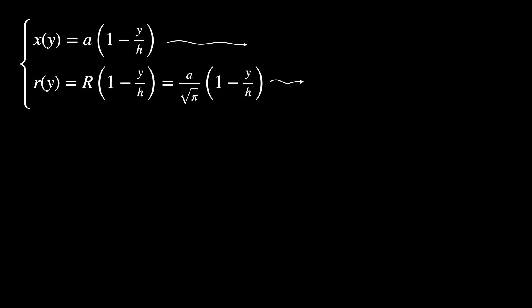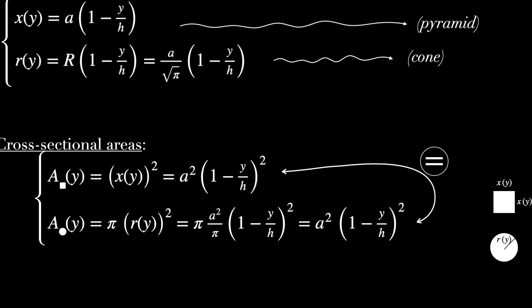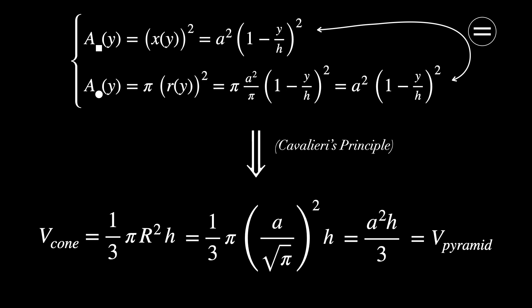Now, let's put together everything we've found out so far. Using these functions, we can calculate their respective cross-sectional areas for any height y between 0 and h. And working on the math here, we find out that they have the exact same area. So their cross-sectional areas are indeed the same, just as required by Cavalieri's principle. And applying this principle now, without performing any further calculations, we can confidently conclude that their volumes are going to be the same as well.